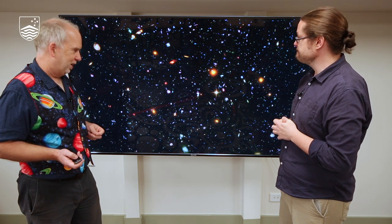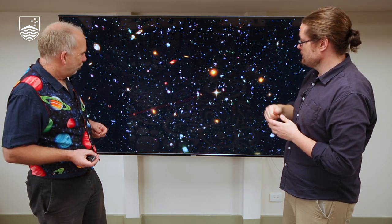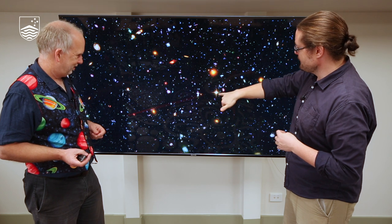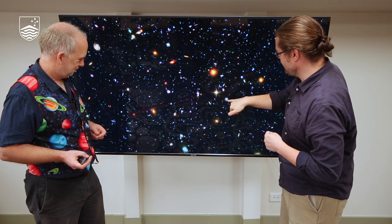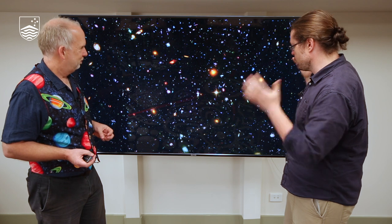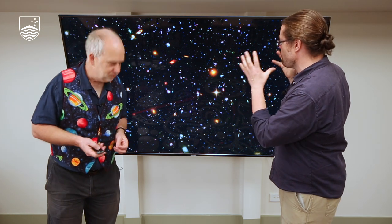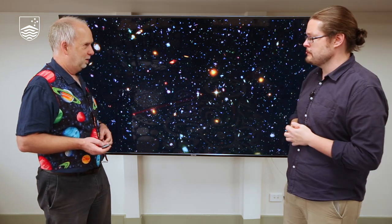But that's going to be difficult for something like this. We don't know these things are the same size. Is that a star, or is that the same size as that entire galaxy? How do we start figuring out what is what in an image like this?